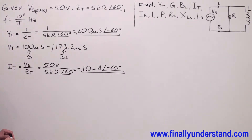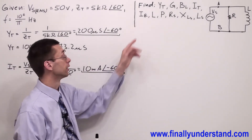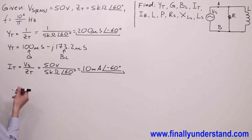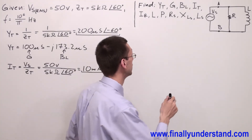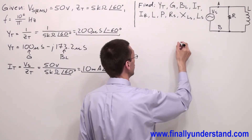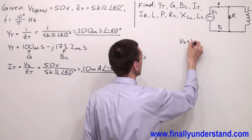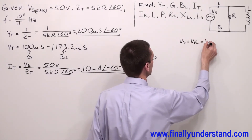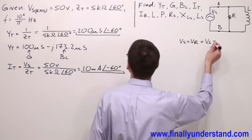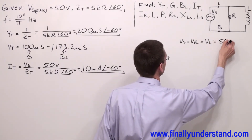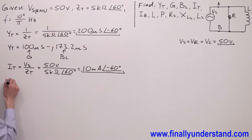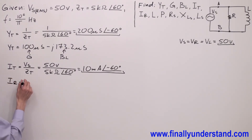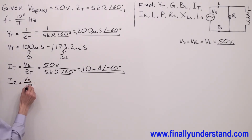Next, I'm supposed to find the current which goes through the resistor. Please notice that we have a parallel circuit. You have to keep in mind that the voltage in a parallel circuit is the same across every single component. So voltage source equals VR, and this is also equal to VL, and all of them are equal to 50 volts RMS. So we have IR equals the voltage across the resistor divided by resistance.